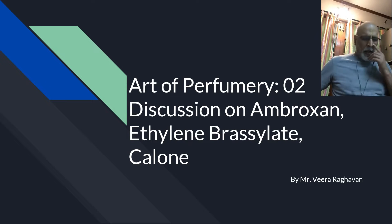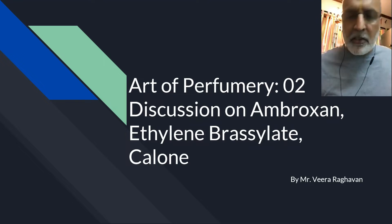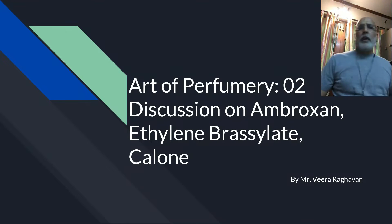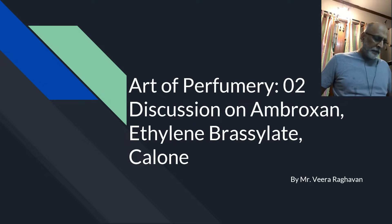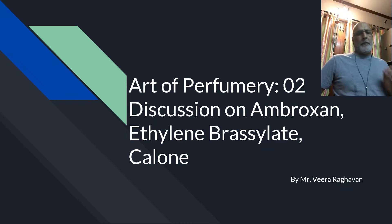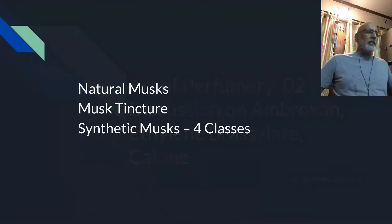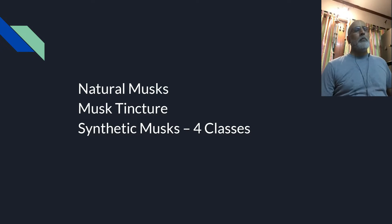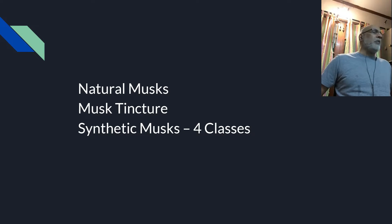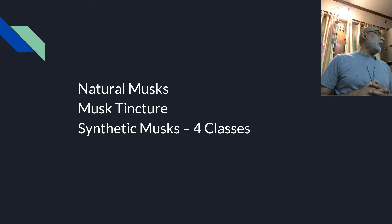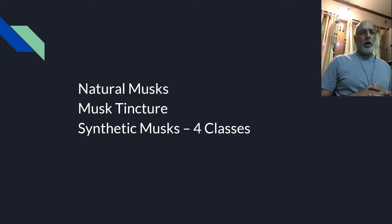Galaxolide, I said, is a polycyclic musk. I want to speak about one more specialty musk ingredient — ethylene brasilate. But before going to ethylene brasilate, I would like to touch upon more details about musk as a family of perfumery ingredients, as an olfactive family in modern perfumery.